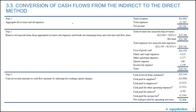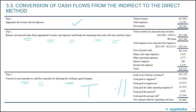The textbook goes through an example where step one is to aggregate all revenue and all expenses. Step two, remove all non-cash items from aggregated revenues and expenses and break out the remaining items into the relevant cash flow items. And then step three, convert the accrual amounts to cash flow amounts by adjusting for working capital changes, which is basically looking at our T-accounts using the direct method.